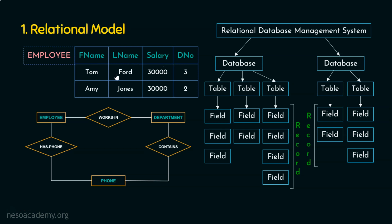Tom, Ford, 30000, and 3 — this complete information is referred to as a record, where this record has four fields: the first name field, the last name field, salary, and department number. In simple terms, a record is a collection of fields, a collection of fields is referred to as a table, a collection of tables is referred to as a database, and a collection of databases is referred to as the relational database management system. In a relational database system, multiple relations exist; each relation is a table, and each table contains multiple fields.